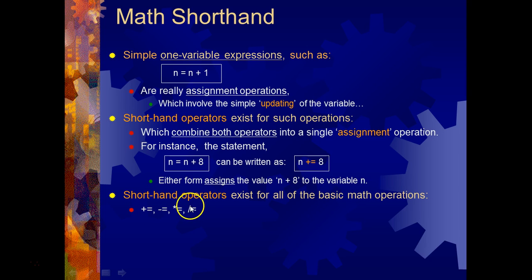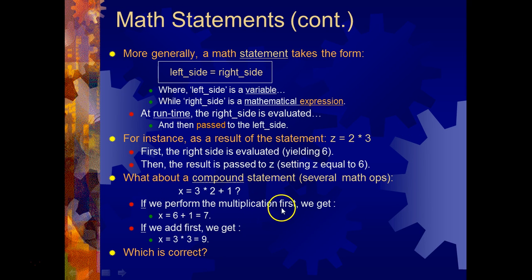And the other ones are, so you have plus equals if this is plus, you have minus equals if this was n minus 8, if this was n times 8 you could do this, and if this was n forward slash 8 you could do this. So we can do that.